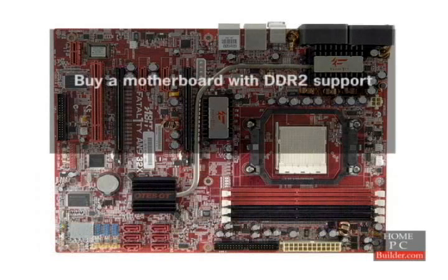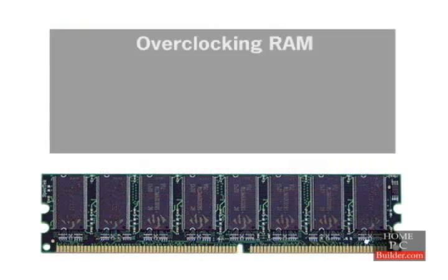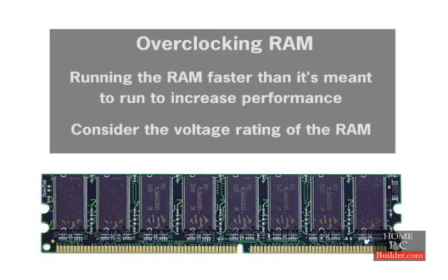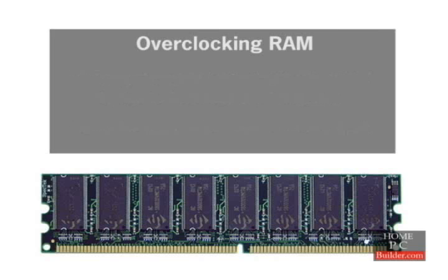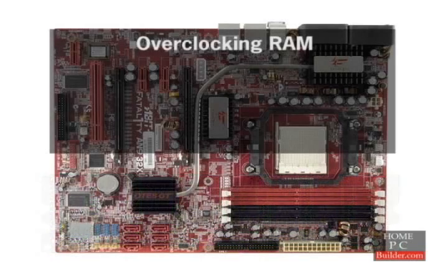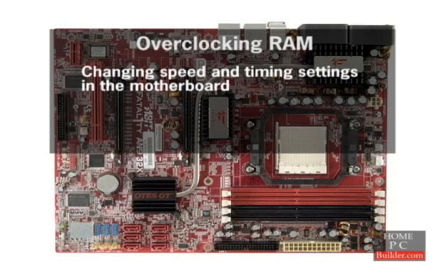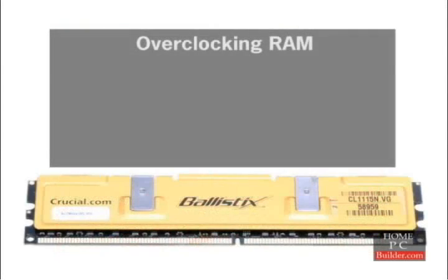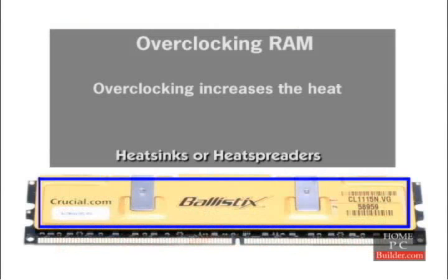Keep in mind that most motherboards support either DDR or DDR2, so make sure the motherboard you buy supports DDR2. If you're planning to try overclocking the RAM, you might also look at the voltage rating. Overclocking means running the RAM faster than it's meant to be run to get more performance. The standard voltage of DDR2 RAM is 1.8 volts, and you can find RAM that will run up to 2.2 volts. To overclock, you'll increase its speed using settings in the motherboard's BIOS and up the voltage to keep the system stable. Keep in mind that overclocking the RAM will also increase the heat, so look for RAM with built-on heat sinks, also called heat spreaders, if you plan on overclocking.